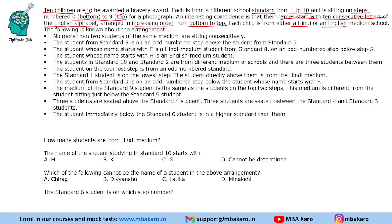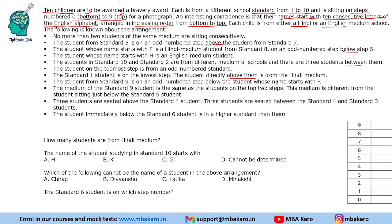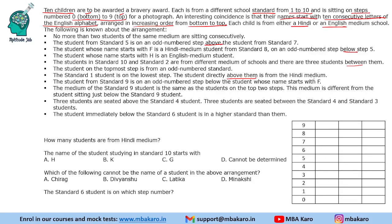The parameter used here is the steps, since statements mention 'above', 'below', and 'between'. So we take the first column as steps and build a table with: step number, standard of student (1 to 10), first letter of name (unknown initially), and medium (Hindi or English). We will use the conditions to determine the order, and once one position is confirmed, we can fill in the rest.